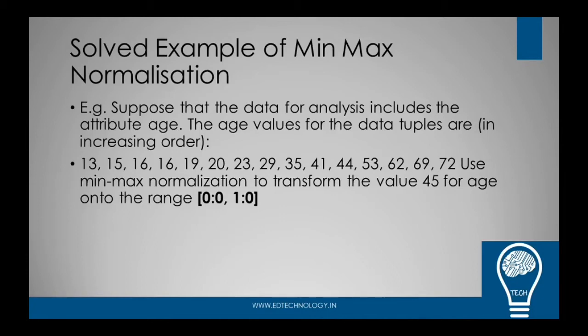Here I have a range of a particular product in tuples in increasing order. From 13 to 72 as you can see, I've got data which is 13, 15, 16, 16, 19, all the way to 72. I want to apply min-max normalization on the value 45 for age onto the range which is 0 to 1. So I want to transform this whole set of numbers onto the scale of 0 to 1.